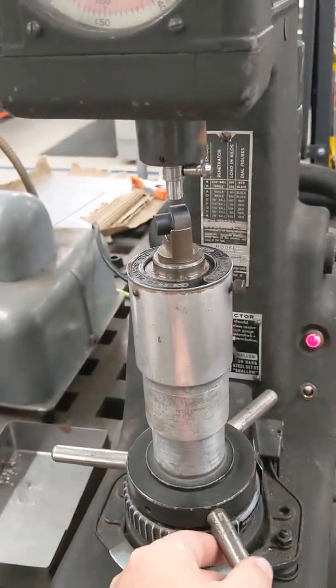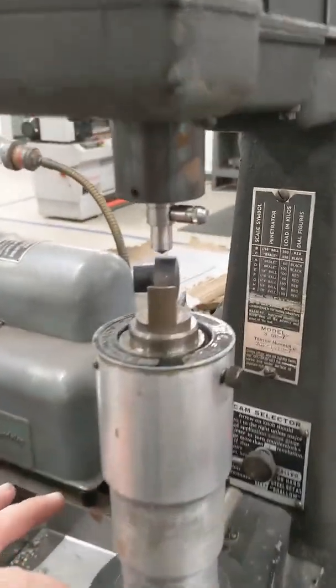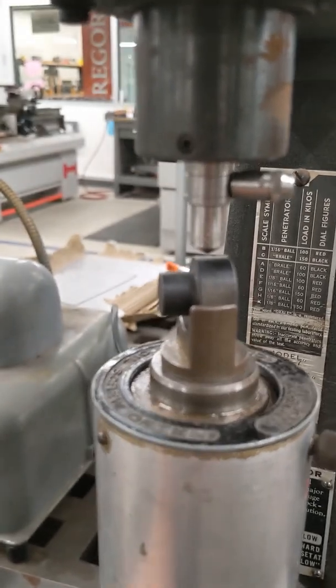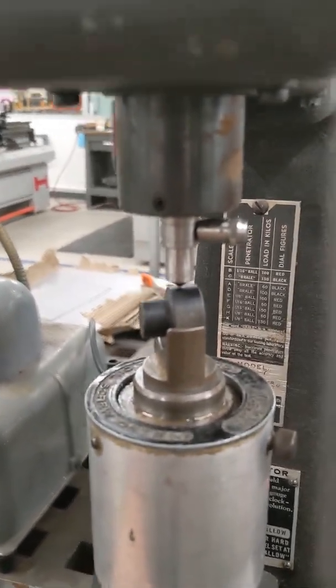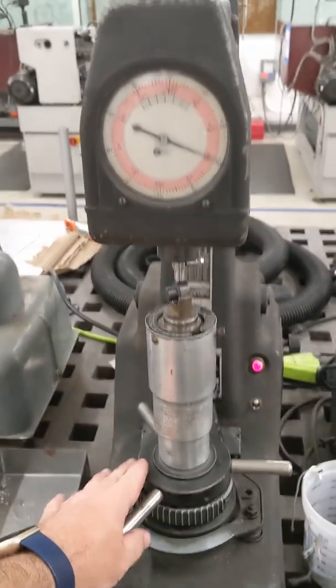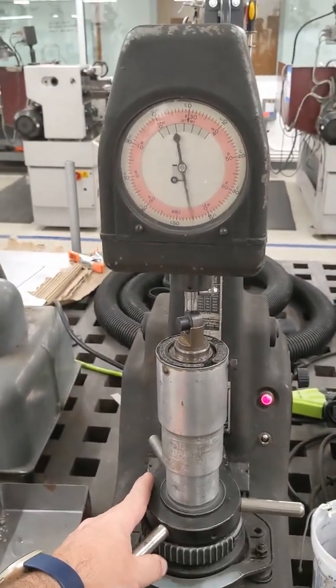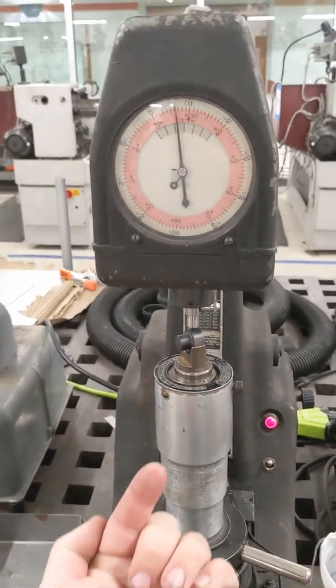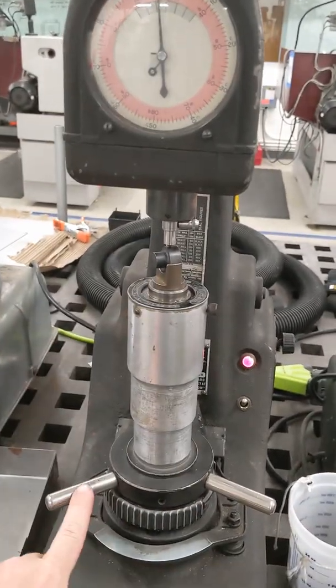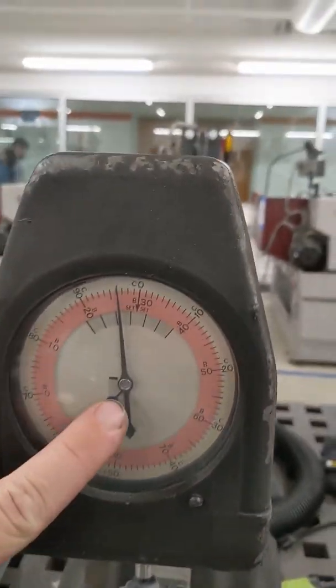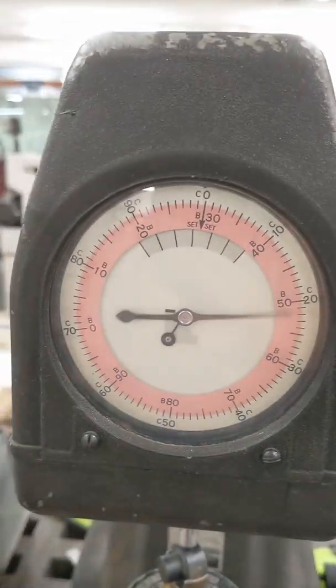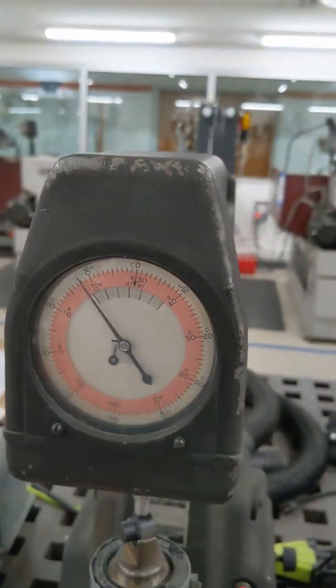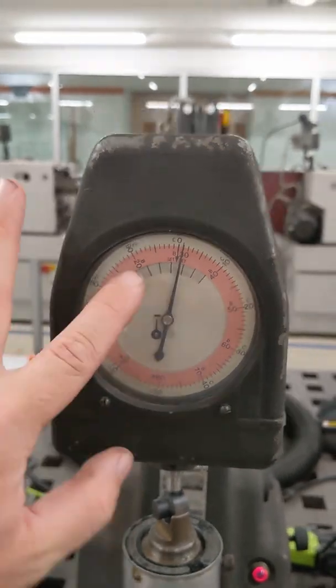You turn the handle on the bottom to bring the test sample up until it touches the indenter. Just to the point where it touches, and then you continue to rotate the handle and watch the two needles on the scale. You need to bring the sample up into the indenter using the handles until the little needle is pointing straight up and the big needle is pointing about straight up. You don't have to get it exactly at the zero.